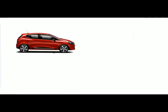In the second example, the car is moving along the positive x-axis, but now it is slowing down. Initially the car moves at 8 m/s, and after a time interval of 1 second, the velocity decreases to 3 m/s. So the final velocity is less than the initial velocity.